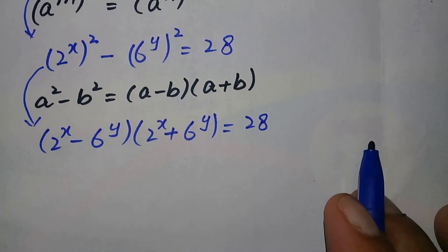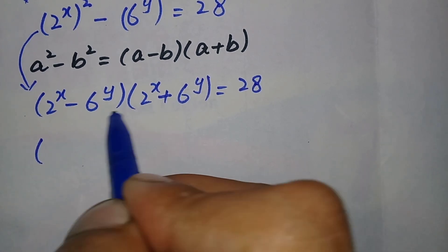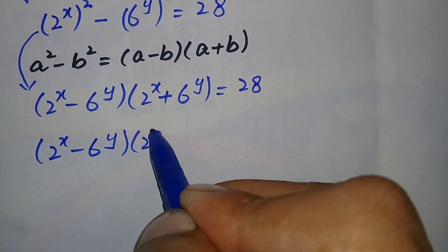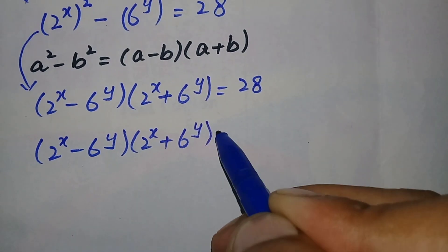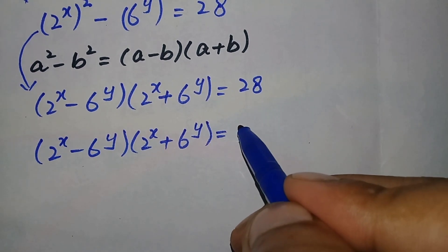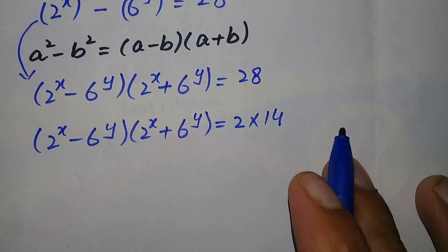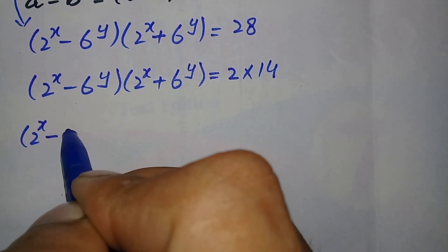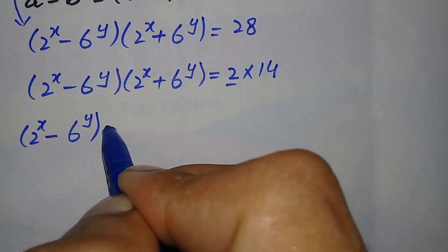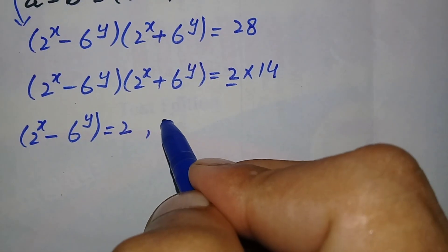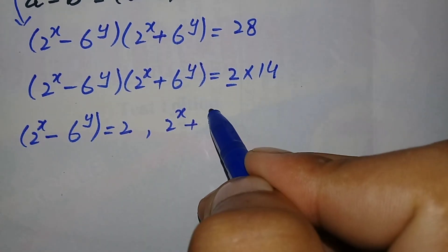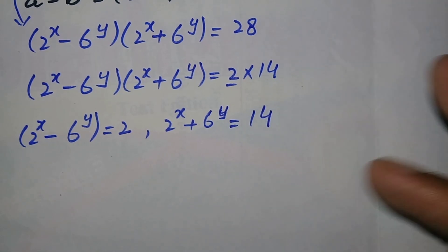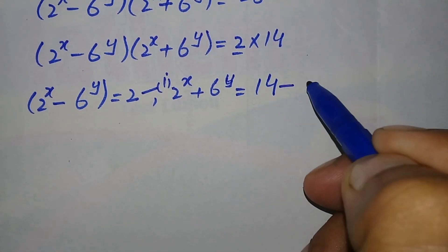We split 28 as 2 times 14. So we get two equations: equation 1 is 2 raised to power x minus 6 raised to power y equals 2, and equation 2 is 2 raised to power x plus 6 raised to power y equals 14.